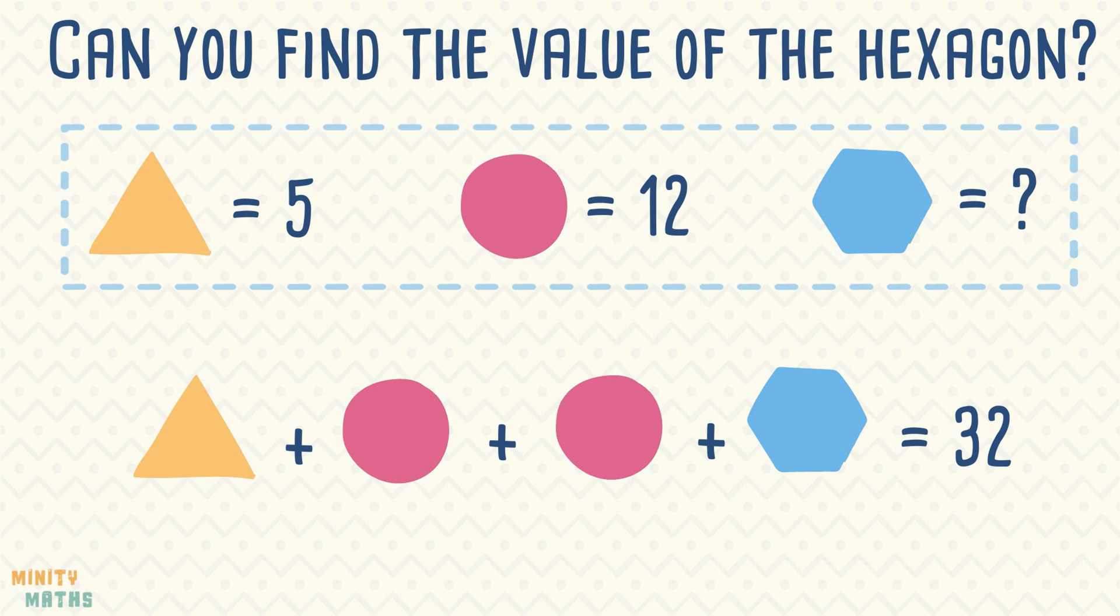If we firstly complete the parts that we know, adding the value of the triangle to the value of two circles, we have a total of 29. We need to know what number we can add to 29 to make a total of 32. This number will be the value of the hexagon. If we take 29 away from 32 we have 3. So the value of the hexagon is 3.